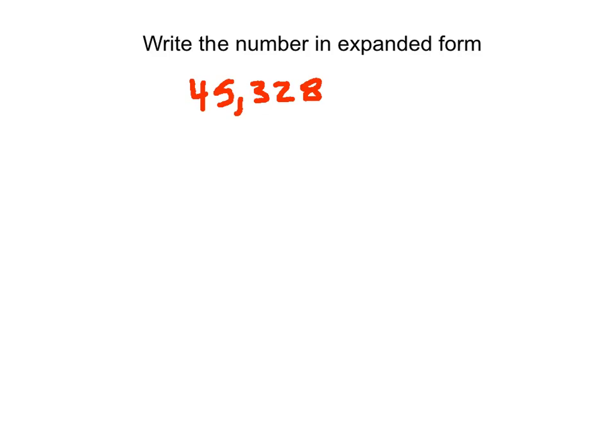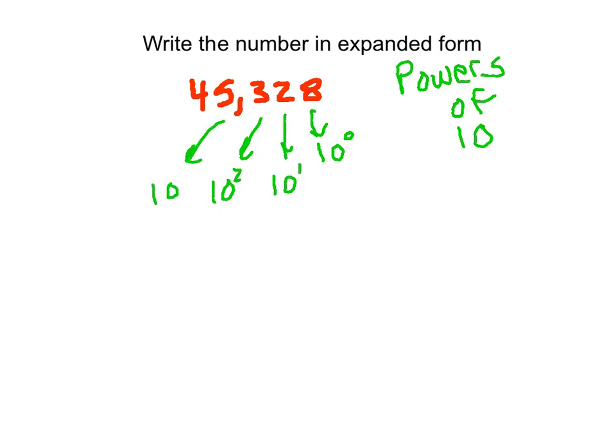This particular question asks us to write the number in expanded form. In other words, we want to write this out using powers of 10. We are in base 10, so we're going to use powers of 10. And we know that as we go from one column to the next, it's an increased power of 10. So this represents 10 to the 0. The next column represents 10 to the 1st. This third column represents 10 squared. And this will increase, so this will be 10 to the 3rd, and this will be 10 to the 4th.